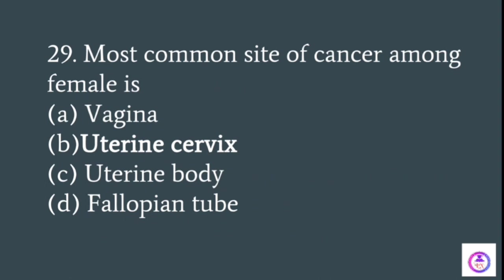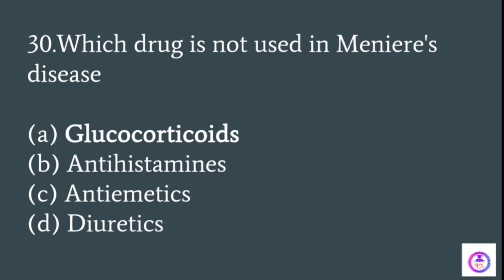The most common site of cancer among females is the uterine cervix. Glucocorticosteroids are not used in the treatment of Meniere's disease. Meniere's disease is a disease of the inner ear in which there is a spinning sensation, hearing loss, and vertigo.